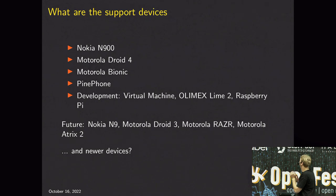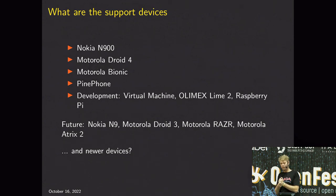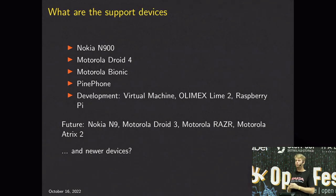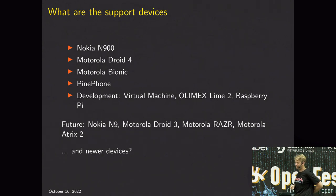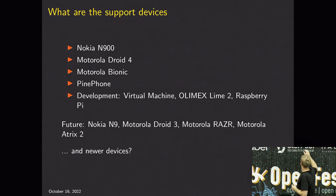Currently supported devices: the Nokia N900 (also the least powerful one), the Motorola Droid 4, the Motorola Bionic, and the Pine Phone - the most recently manufactured device, made by Pine64. It doesn't have a keyboard by default but you can buy a keyboard add-on. Battery life is not great on the Pine Phone, more of a hardware problem. For development, we have virtual machines supporting the Intel architecture. The Olimex Lime 2, various Allwinner tablets, and the Raspberry Pi are also supported.